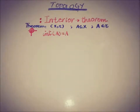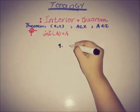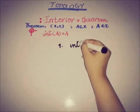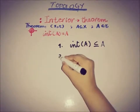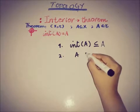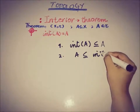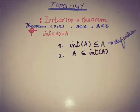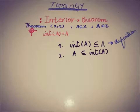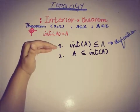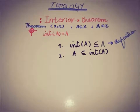For proving this equality we have to show two things. The first thing is that the interior of the set A is a subset of A, and the second thing is that A is a subset of the interior of the set A. The first part — interior of A is a subset of A — is just the definition of the interior of the set A, because the interior of A is the union of all open sets contained in A, and by definition it is a subset of A.